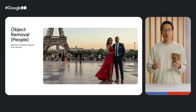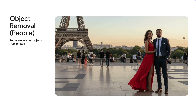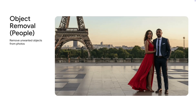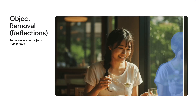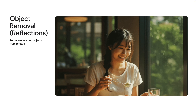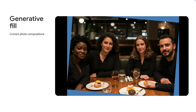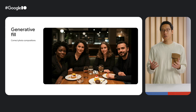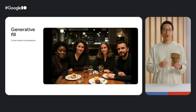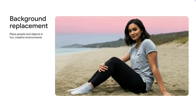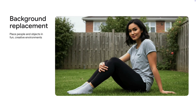Beyond generating images from text prompts, Imagen can do image editing as well. It can remove objects from an image to turn a photo into a beautiful view, and remove reflections on windows to make a picture-perfect photo. Besides object removal, Imagen can also insert objects into images or extend an image and fill in the missing areas. These features can be used to correct photos taken at a bad angle. Imagen can even completely replace the background of a photo, making them more interesting.